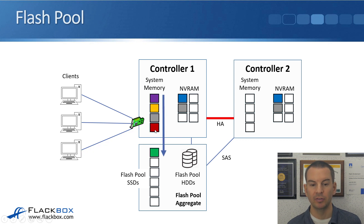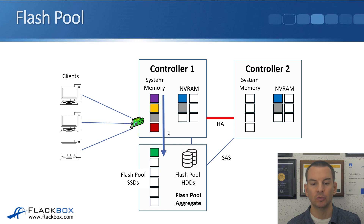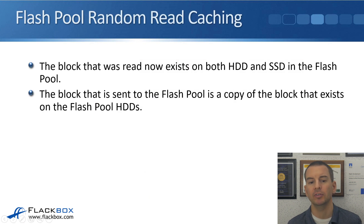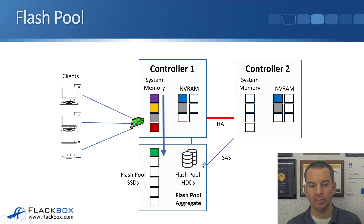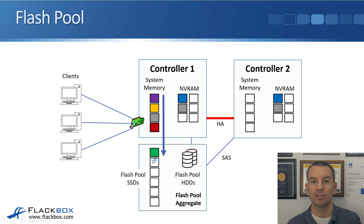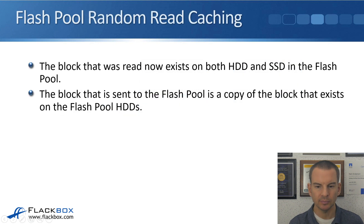The green data that was in the bottom slot in system memory was randomly read data — a good candidate to be cached on the SSDs — and it has been marked by the system to be cached. At the next consistency point, it will be written to the SSDs used as the cache at the front of the aggregate. The block now exists on both HDD and SSD in the FlashPool. The block sent to the FlashPool is a copy of the block that exists on the HDDs.